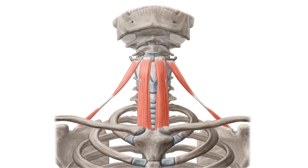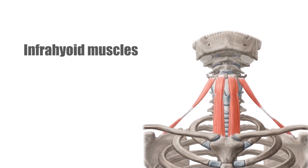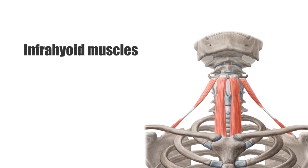Right now we're looking at an anterior view of the neck where you can see these muscles. The infrahyoid muscles are a group of four muscles under the hyoid bone, hence the name infrahyoid. They attach also to the sternum, larynx, and the scapula.